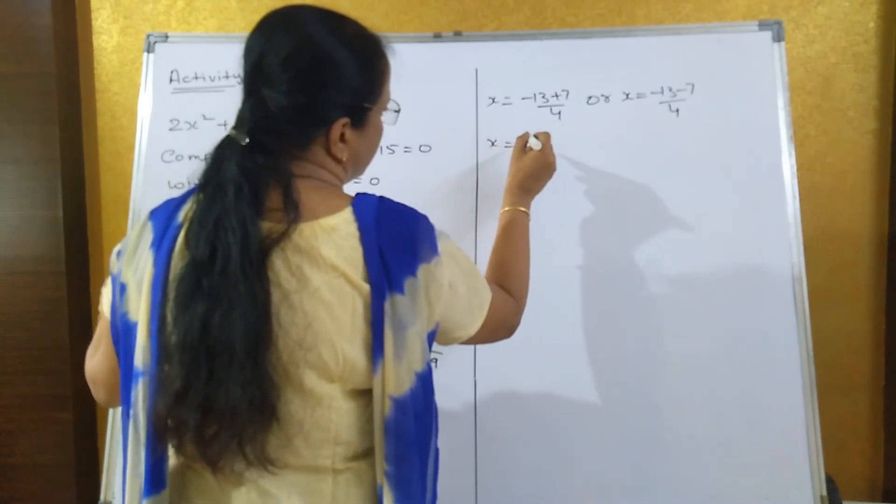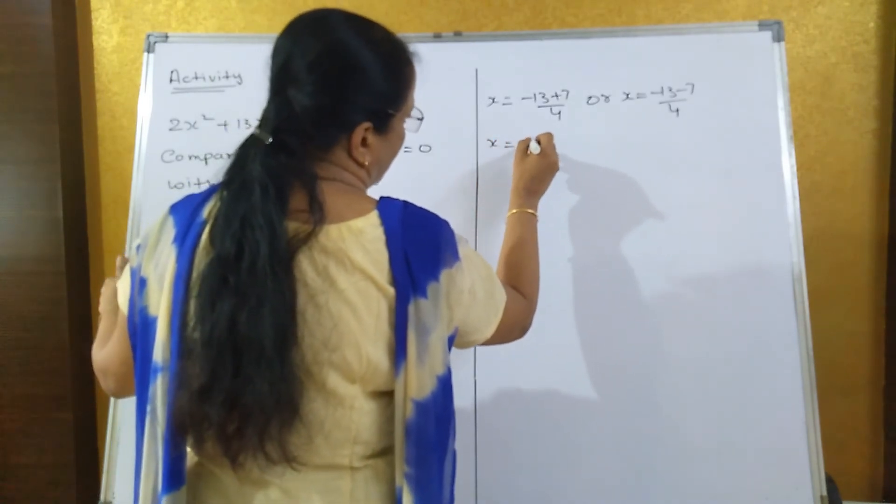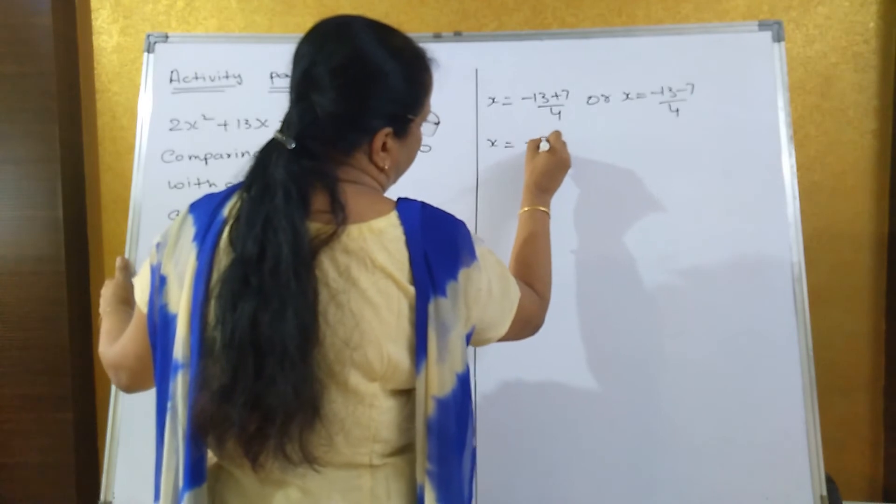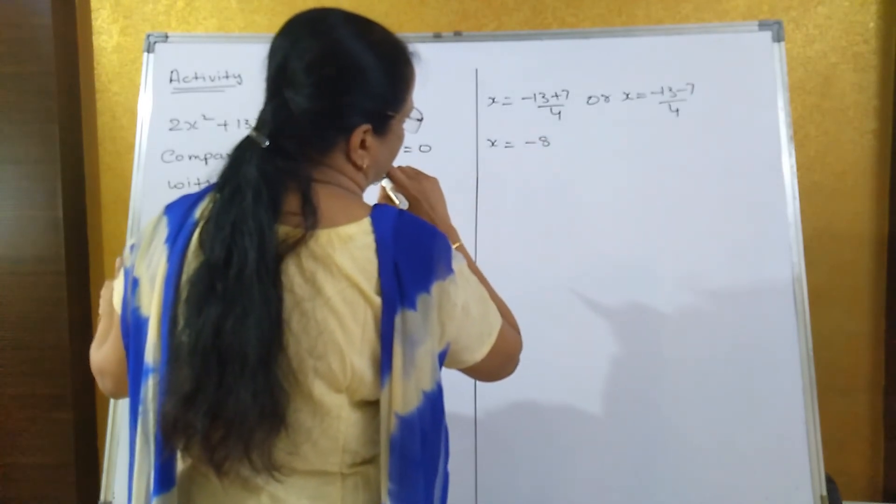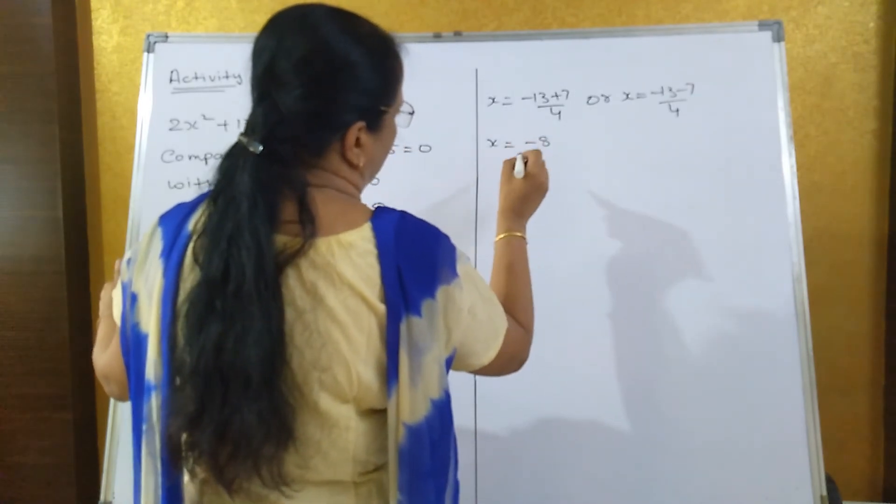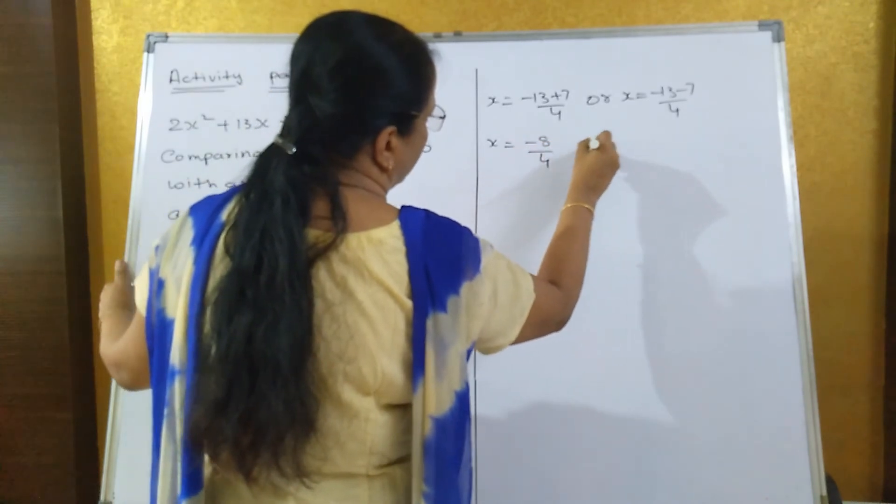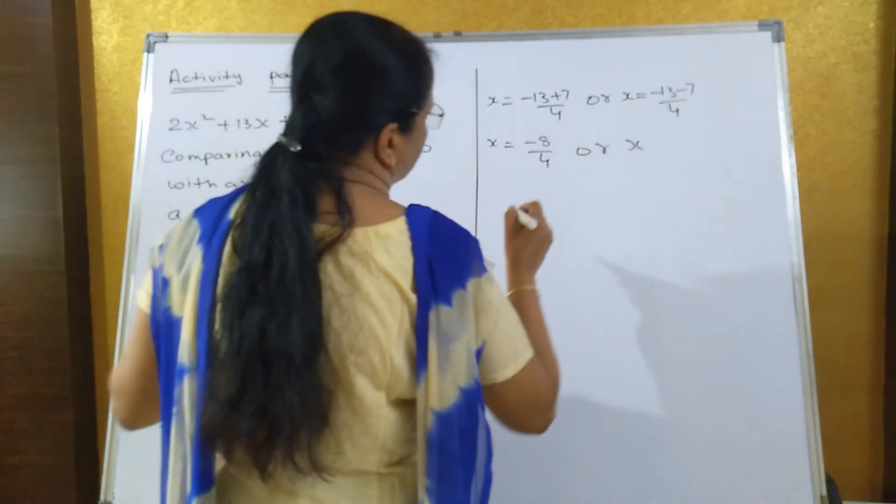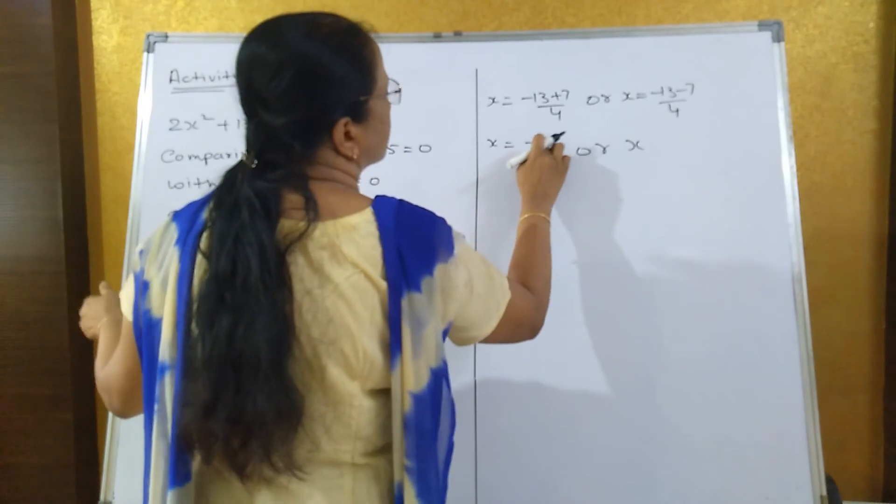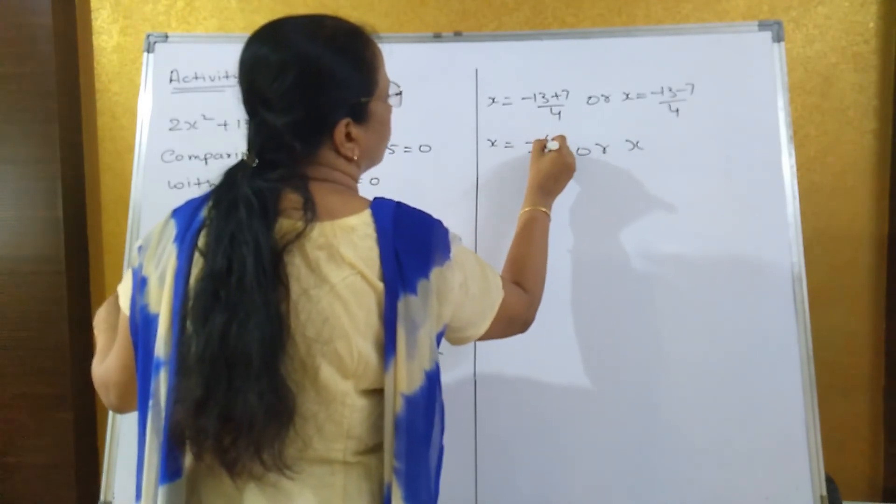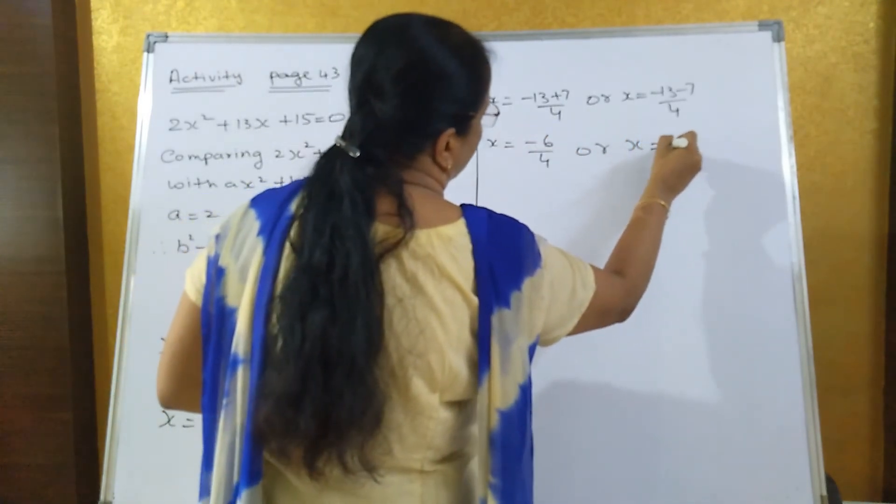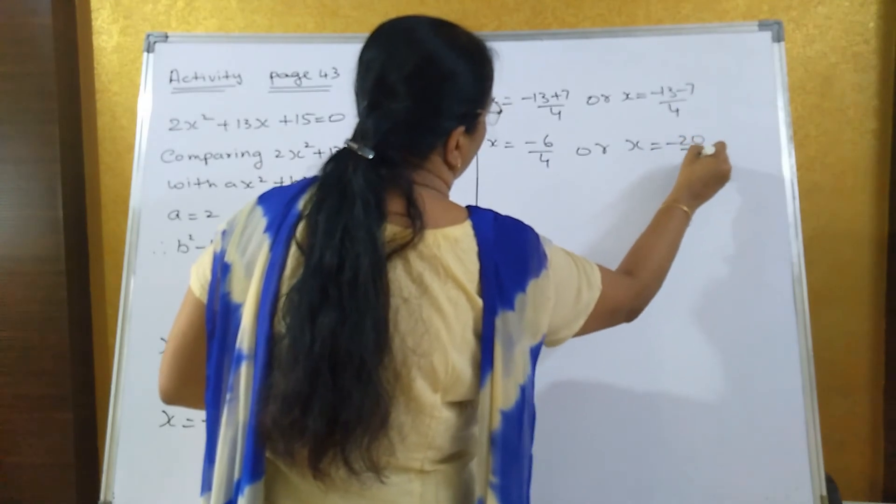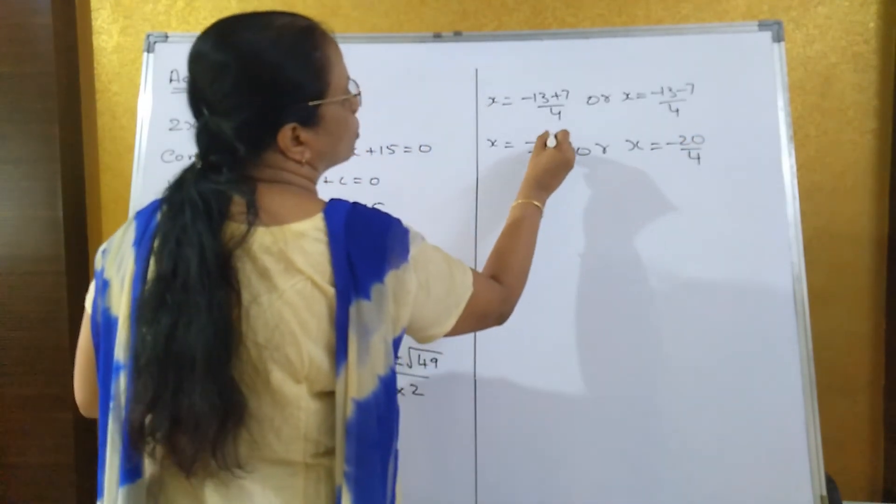x equals minus 8 upon 4, or x equals minus 6 upon 4, and x equals minus 20 upon 4. When you do the cancellation, it goes in 2's table.